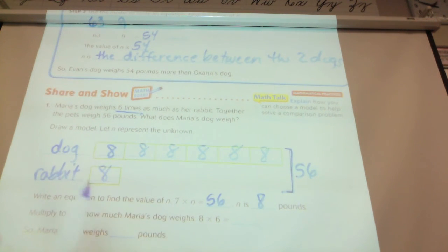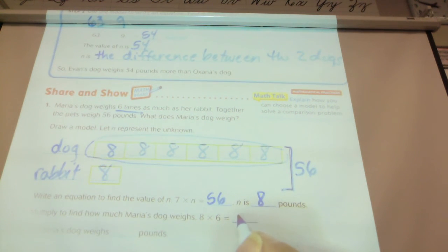So I need to take how many boxes? Six. Six times the eight, and I get 48. And that's how much her dog weighs.